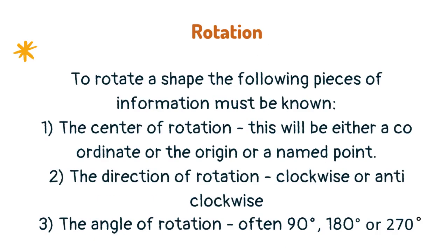To rotate a shape, the following pieces of information must be known: the centre of rotation, which will be either a coordinate or the origin; the direction of rotation, clockwise or anti-clockwise; and the angle of rotation, often 90 degrees, 180 degrees, or 270 degrees. Any point of the shape that lies on the point of rotation will not move.